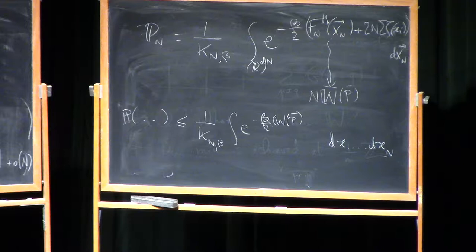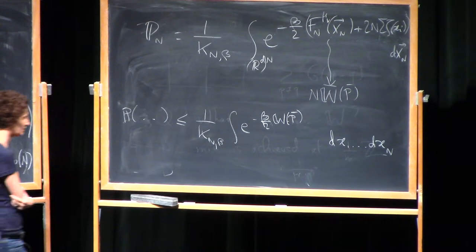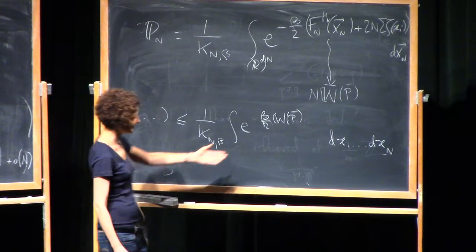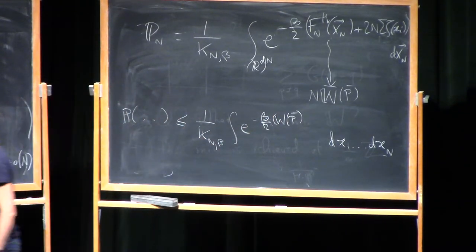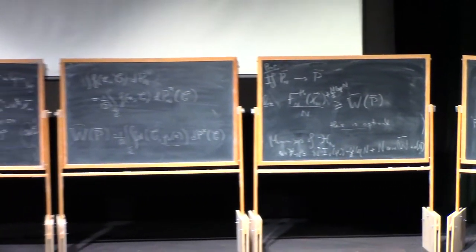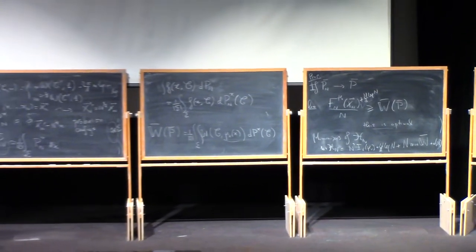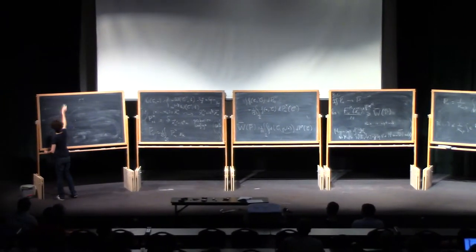Another way of saying this is you have to understand how many microstates create a certain macrostate P_bar — that's how physicists would say. So we have a model for things like that. It's Sanov's theorem, which you may know.